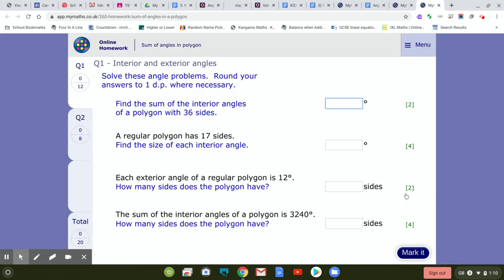If you look at the other tasks: find the sum of the interior angles of a polygon with 36 sides. So it's 36 minus 2, which is 34, times 180. Whatever that answer is, you divide it by the number of sides, 36.